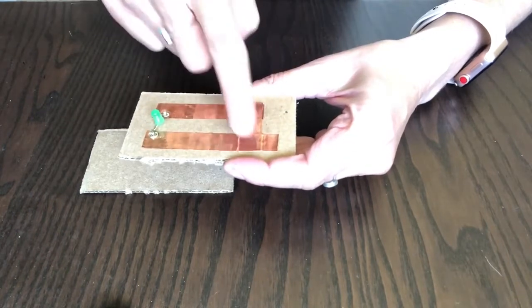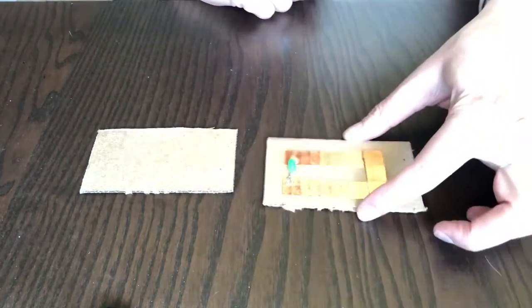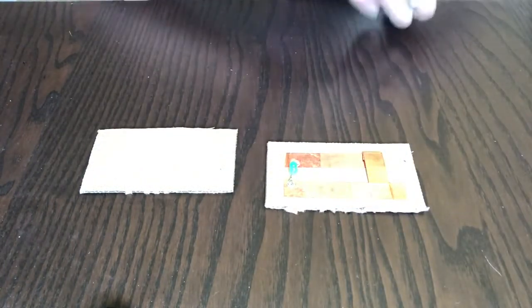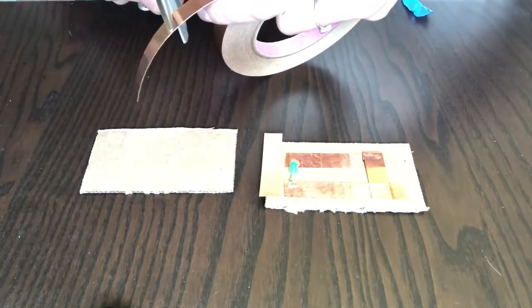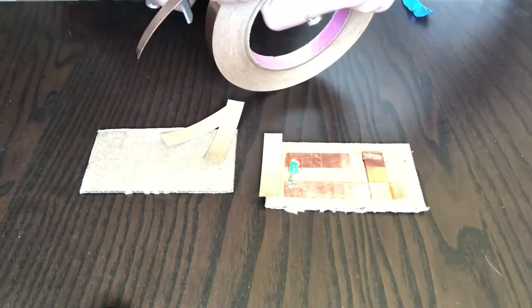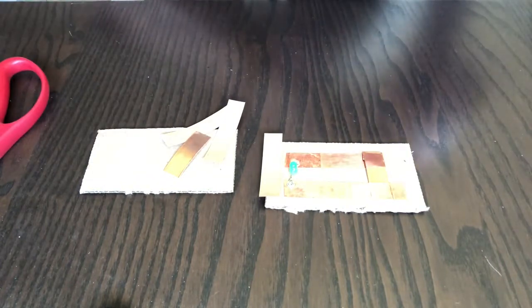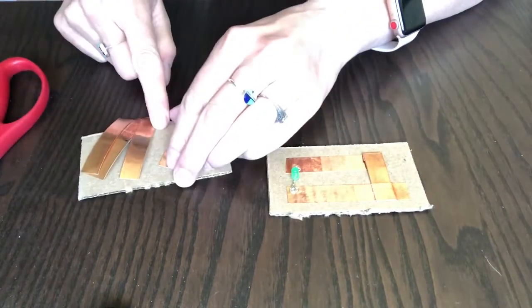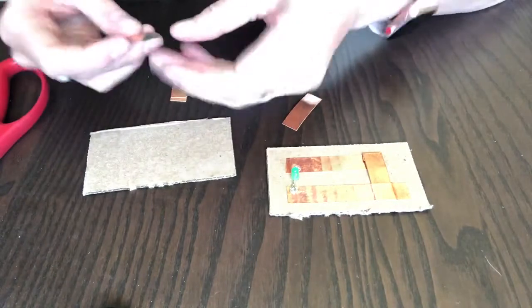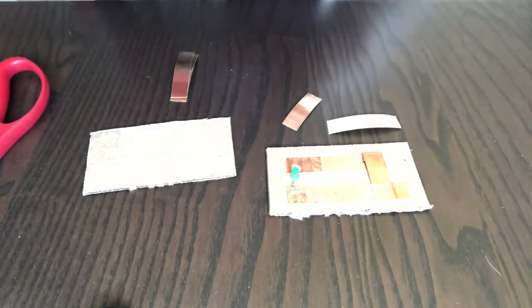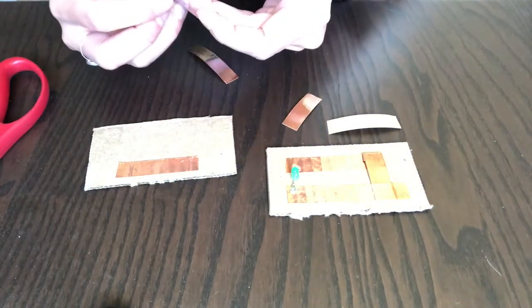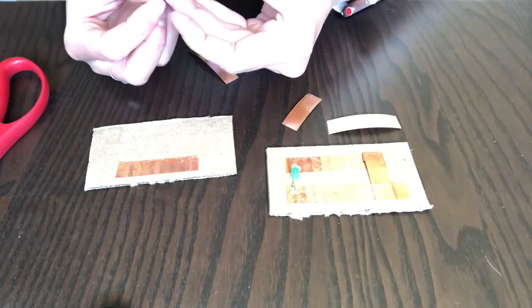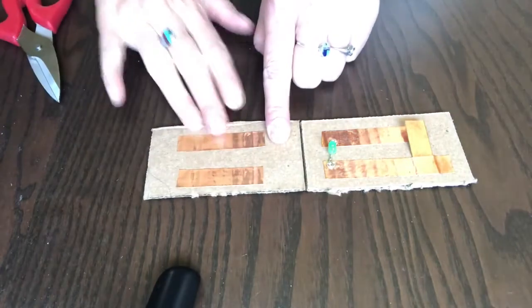We're gonna cut one, two, three, and then this little fourth piece of copper. One, two, three, and four. So three pieces are close to the same size and one is a little bit shorter. Now we'll go ahead and peel it and stick it to the cardboard. The first two pieces are just stuck right to the cardboard.